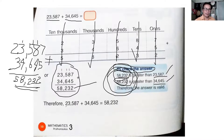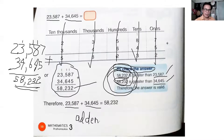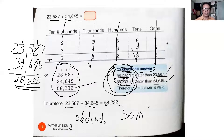So again: twenty-three thousand five hundred and eighty-seven, and thirty-four thousand six hundred and forty-five, are called the addends. And fifty-eight thousand two hundred and thirty-two is called the sum — or total.